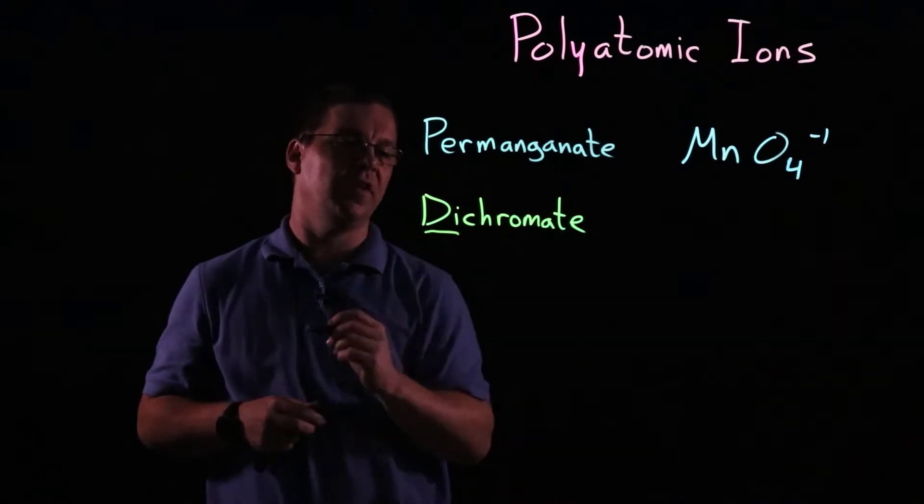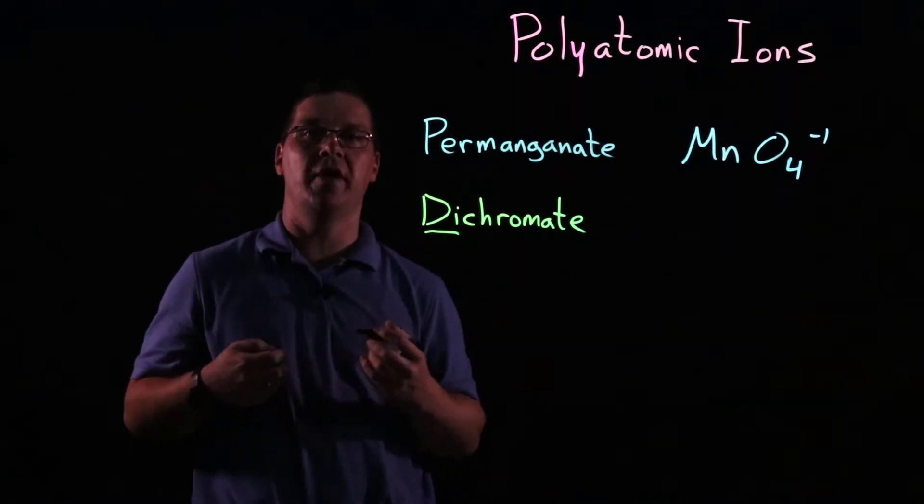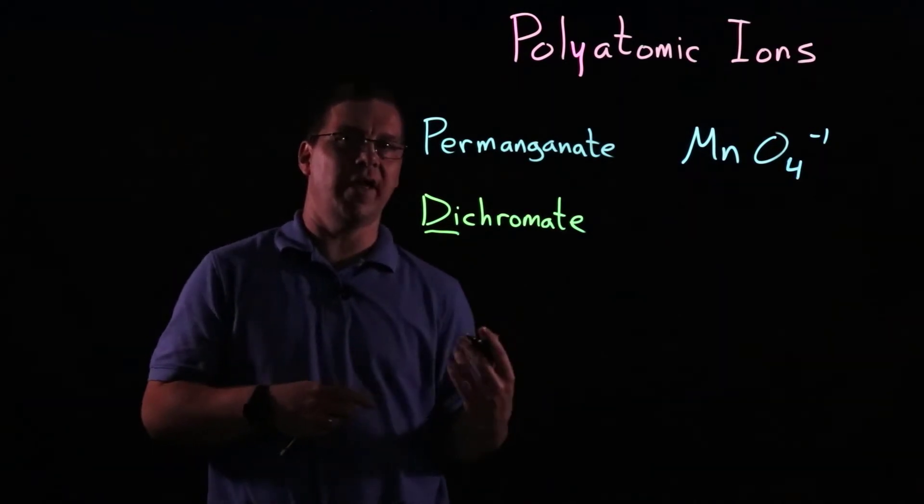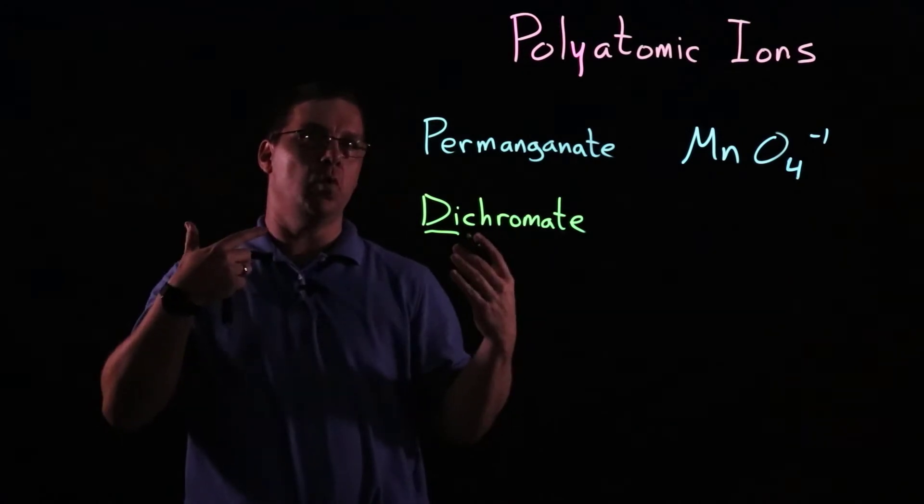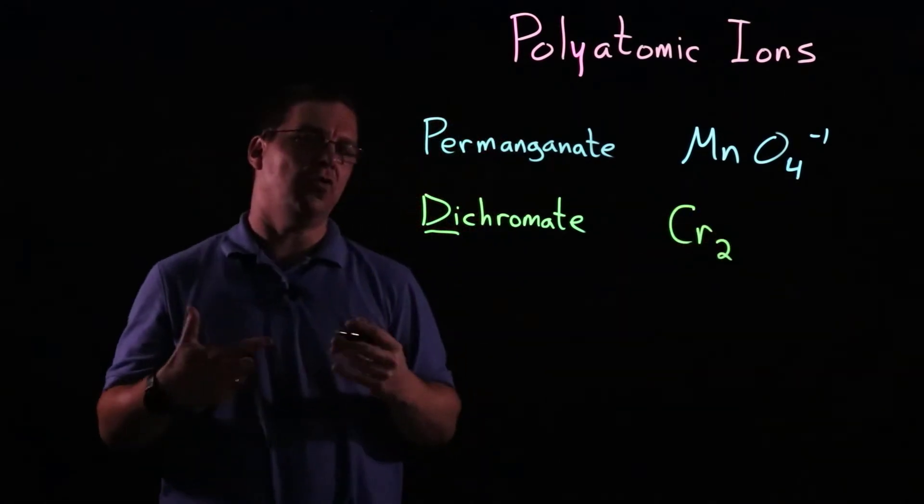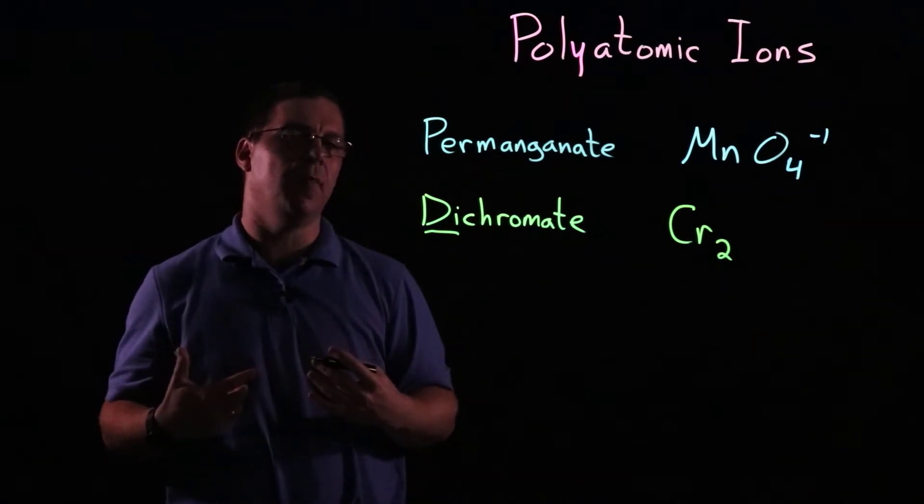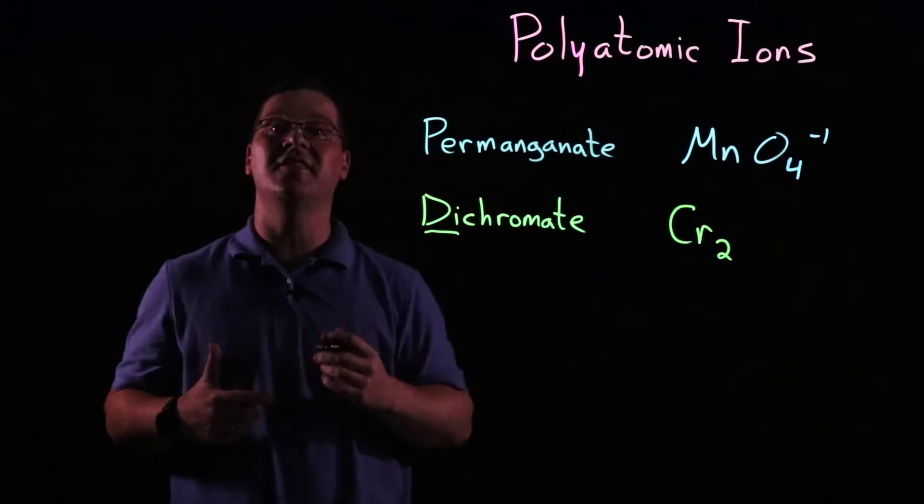And if you think about the prefix di, that is sometimes used as a root word to indicate two of something. So dichromate is almost like saying two chromates. So if you apply that, you might think C-R-2, and then chromate had four oxygens, so you might say eight, but it's not quite eight. It's a little bit less than that, so it's actually seven.